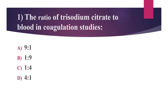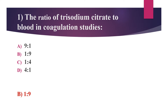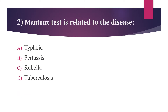First question: the ratio of trisodium citrate to blood in coagulation studies. Option A: 9 to 1. Option B: 1 to 9. Option C: 1 to 4. Option D: 4 to 1. The answer is option B, 1 to 9. In routine collection, 4.5 ml blood is added to 0.5 ml sodium citrate for coagulation studies. In the case of ESR, the trisodium citrate to blood ratio is 1 to 4.